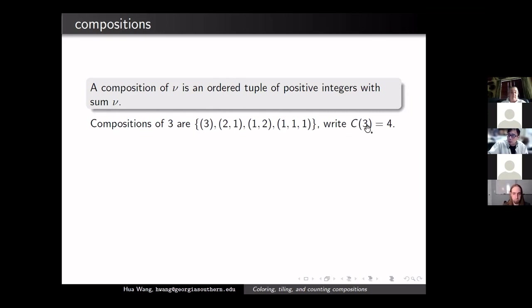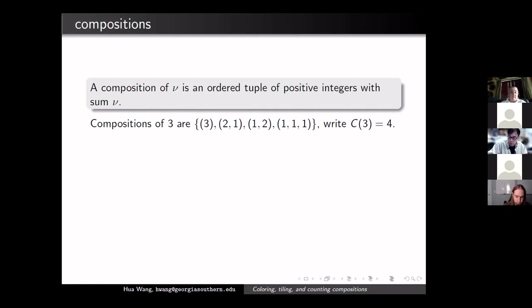We use capital C(μ) to denote the total number of compositions. We use μ instead of n for technical reasons — we need n for something else in the terminology, and some people really don't like using n for different things. So μ here, though I'm still tempted to say n all the time.